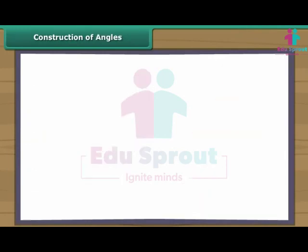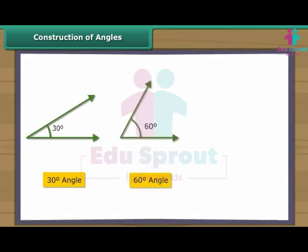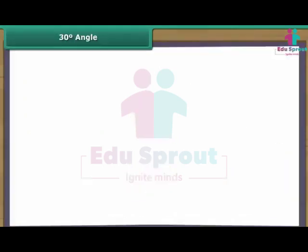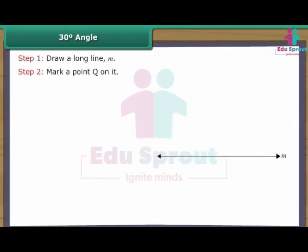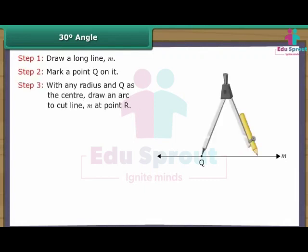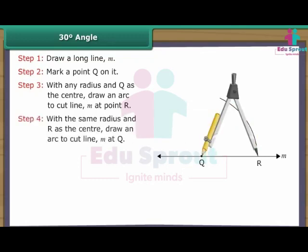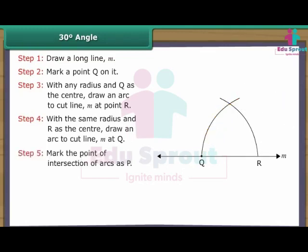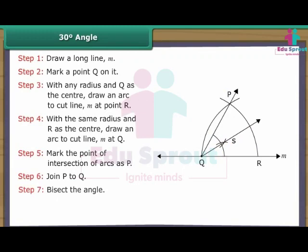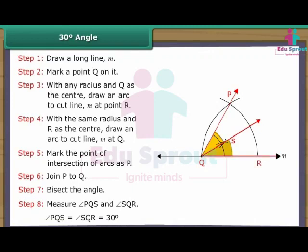Construction of angles. Let us now construct some special angles one by one: 30 degree angle, 60 degree angle, and 120 degree angle. Construction of 30 degree angle. Draw a long line M. Mark a point Q on it. With any radius and Q as the centre, draw an arc to cut line M at point R. With the same radius and R as the centre, draw an arc to mark the point of intersection as P. Join P to Q. Bisect the angle. Measure angles PQS and SQR. Angle PQS is equal to angle SQR, which is equal to 30 degrees.